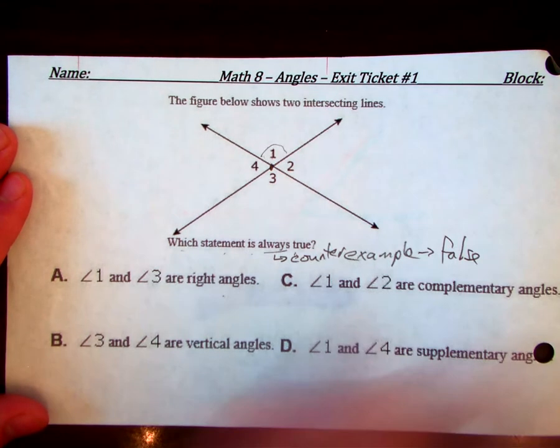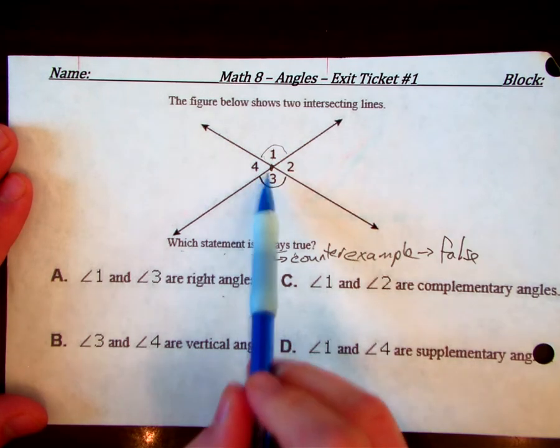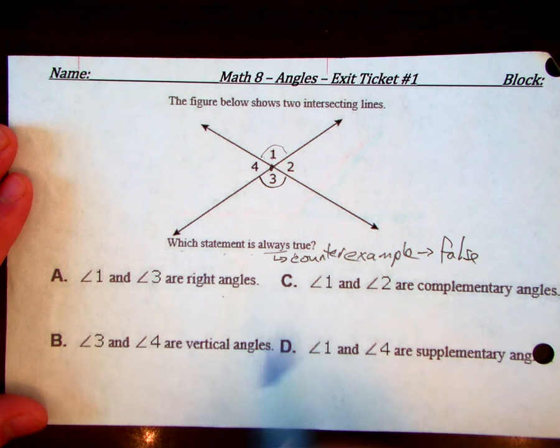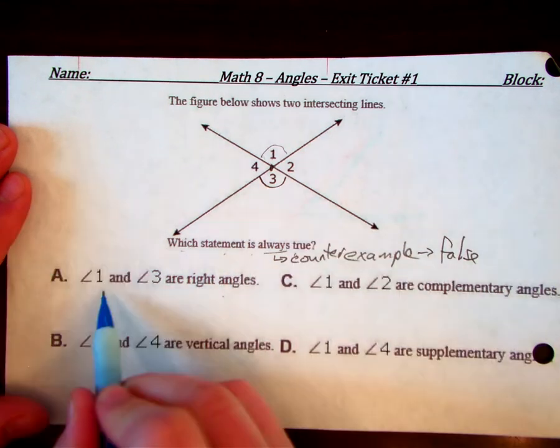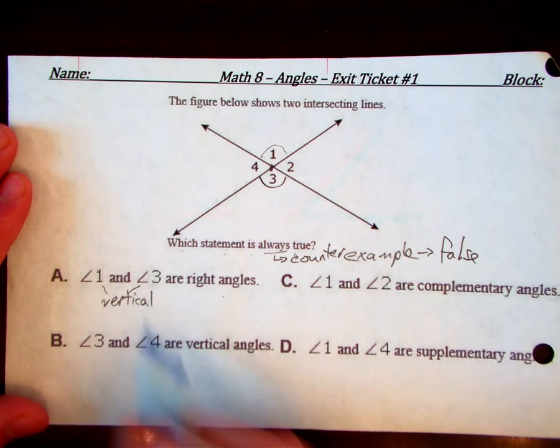And angle three, well, they are opposite of each other, and they do not share a common side. And so they also, these are, so one and three, they are vertical angles. We know that they're vertical angles.